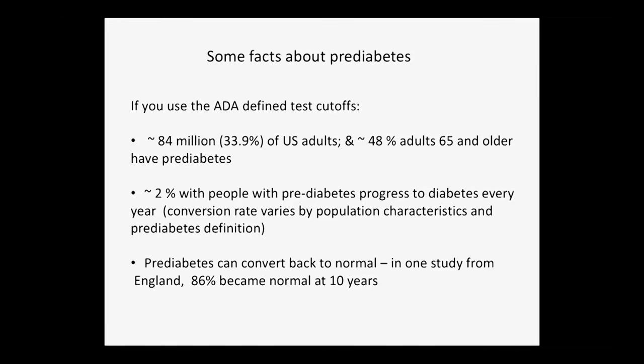As mentioned, you're in that gray zone — you don't have diabetes, but you're not normal. You can switch to both sides: you can go from the gray zone to normal, or from the gray zone to the diabetic zone. About 2% of people with pre-diabetes progress to diabetes every year. This varies a little depending on genetic risks in a particular population — in some populations the transition might be higher, in others lower. And people can become normal — pre-diabetes can convert back to normal. In one study in the U.K., 86% became normal in 10 years. So it's not always true that everybody will progress.